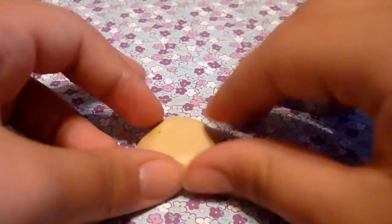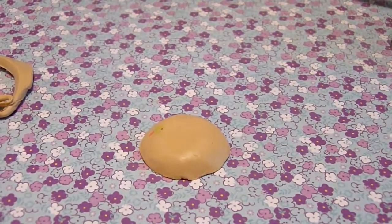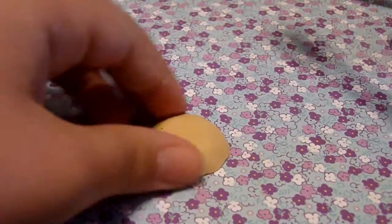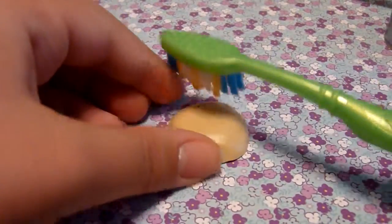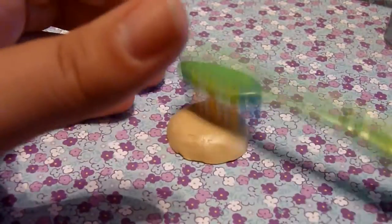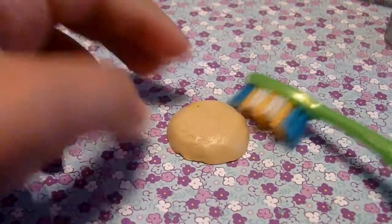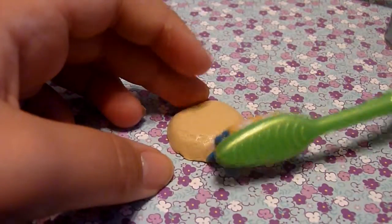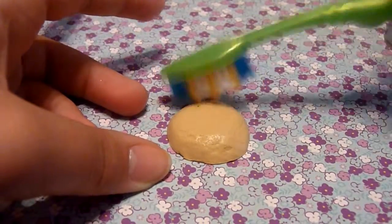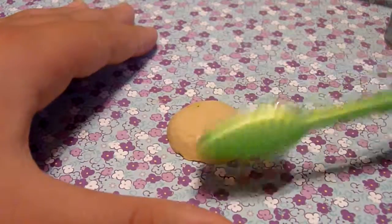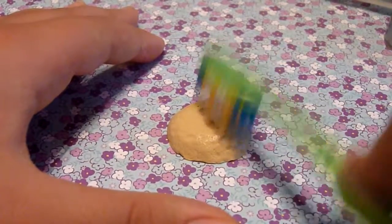So once you're done with that, then you texture it with your toothbrush all around. And you can do as much or as little texturing as you want to. And this just makes it look realistic and have a cookie texture.